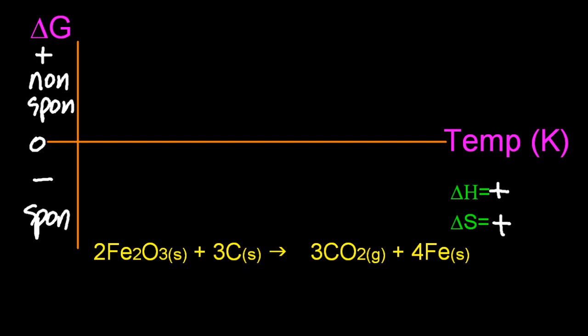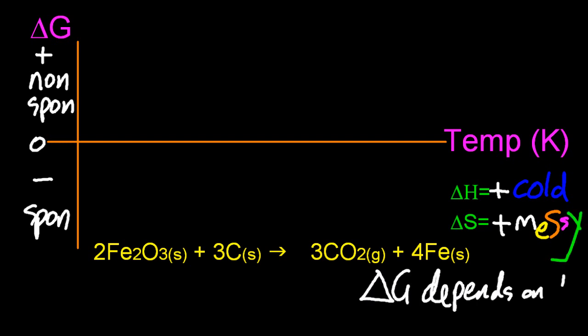So don't forget, delta H is plus. It's endothermic. It's cold. And delta S is plus. It's messy. So this is temperature dependent, this one. Cold and messy. So delta G depends on the temperature.